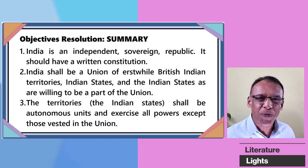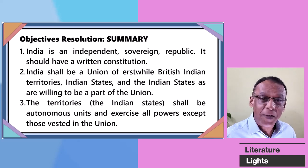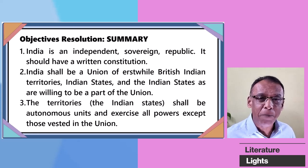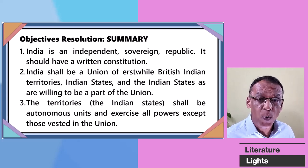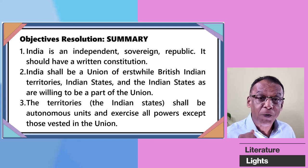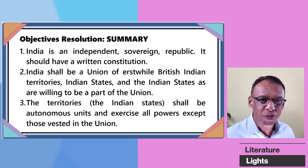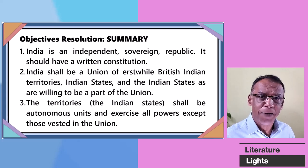Here is a brief summary of the Objectives Resolution presented in the Constituent Assembly by Pandit Jawaharlal Nehru. Point one: India is an independent sovereign republic and it should have a written constitution. Point two: India shall be a union of erstwhile British territories, Indian states, and Indian states that are willing to be part of the Indian union. Point three: The territories, that is the states, shall be autonomous units and they exercise all powers except those vested in the union government.